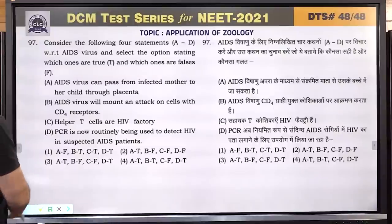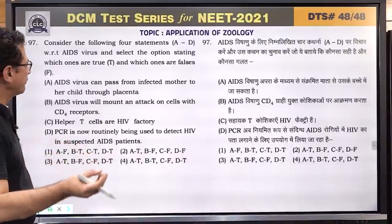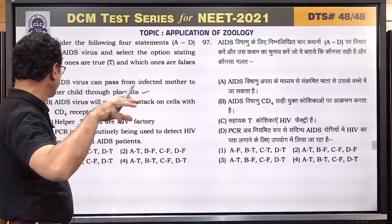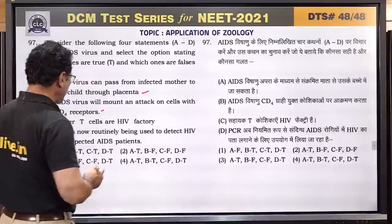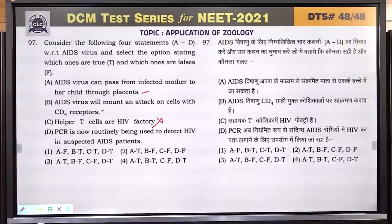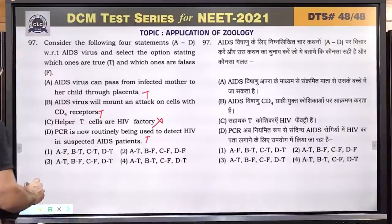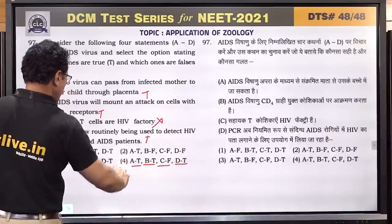Question number 97: consider four statements A to D regarding AIDS virus. A: AIDS virus can pass from infected mother to child through placenta — true. B: AIDS virus attacks cells with CD4 receptors — true. C: helper T cells are HIV factories — false; macrophages are; helper T cells are destroyed. D: PCR is used to detect HIV in suspected AIDS patients — true. Answer: A true, B true, C false, D true — option 4.